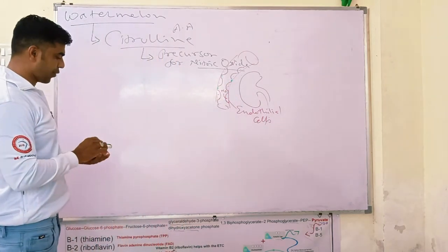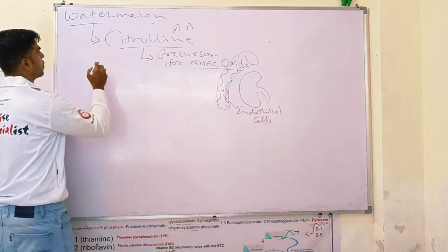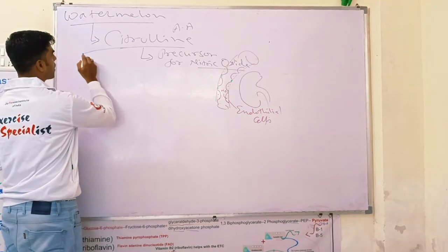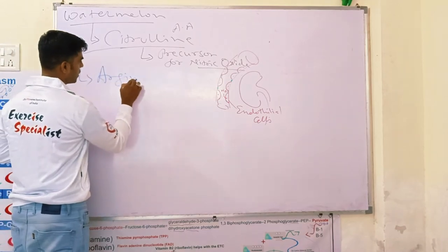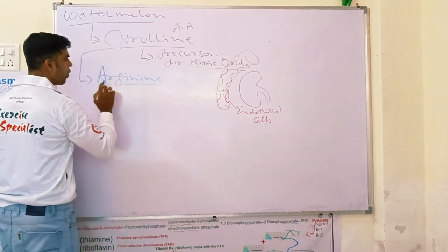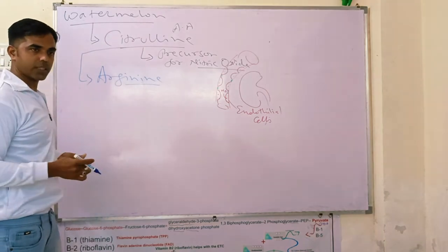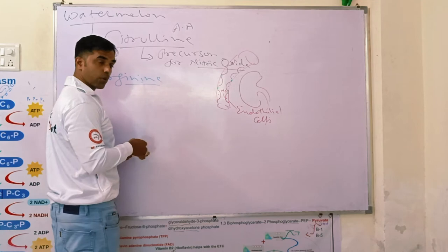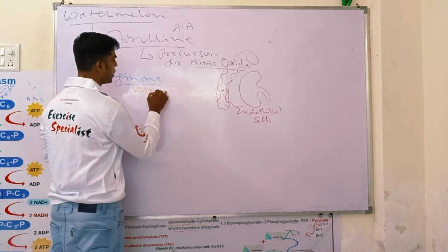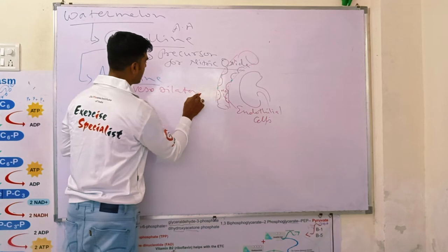Further this citrulline is converted into L-Arginine. Now this is again an amino acid. This is known as vasodilator.